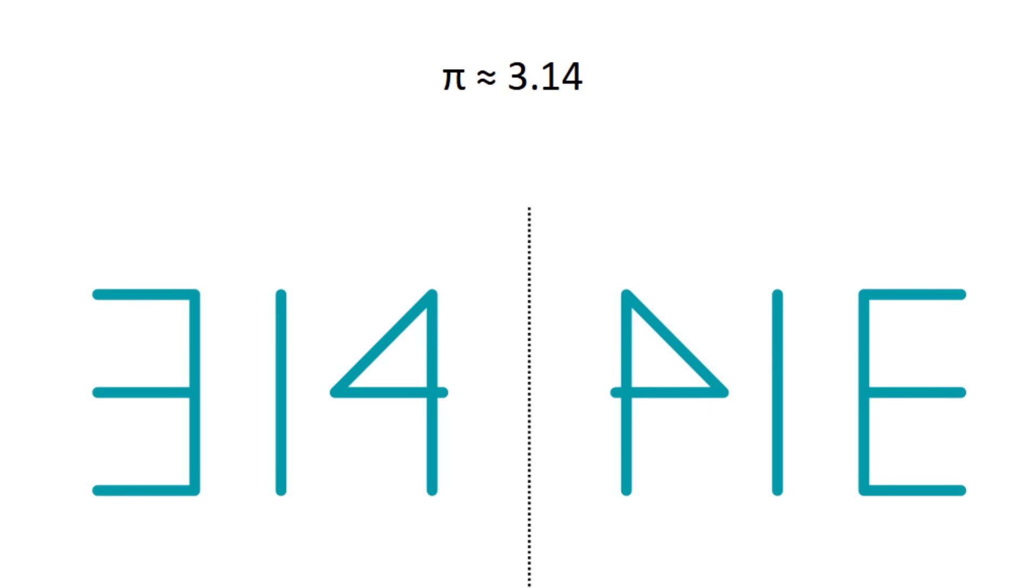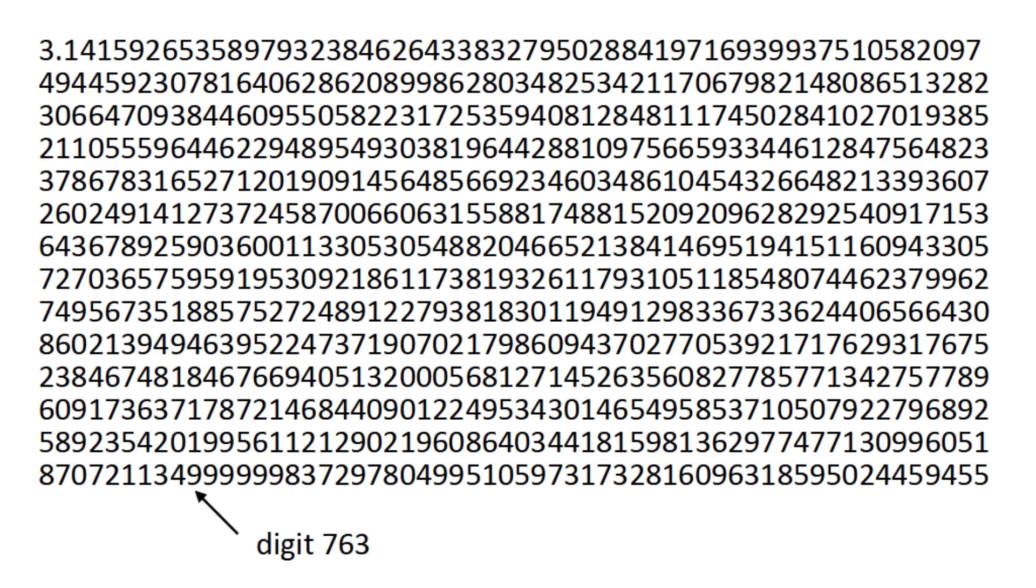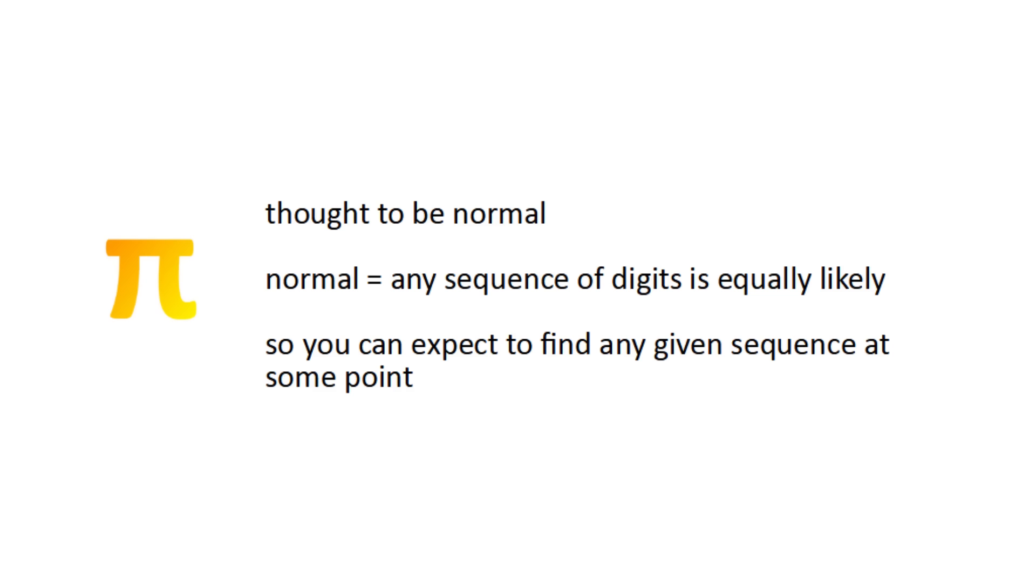For a strictly mathematical coincidence, you can go to digit 763, and you'll find a sequence of six nines in a row. Again, it's not notable that this happens at all in pi, since it is conjectured that any digit combination is equally likely, but it's notable how early it happens.